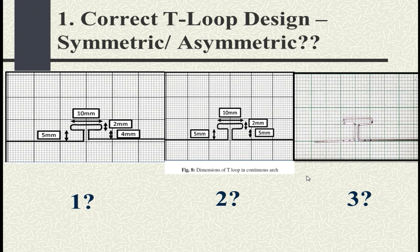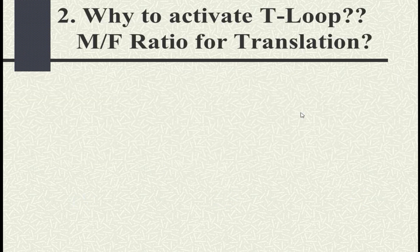For example, if you have intruded the entire segment by 2 mm, you can keep the vertical height at 3 mm. You can also reduce the vertical height in cases where vestibular depth is limited to around 8 mm. So as per your case we have to choose the design.